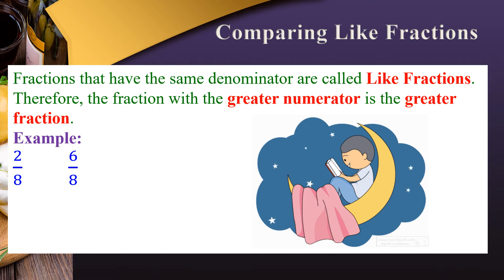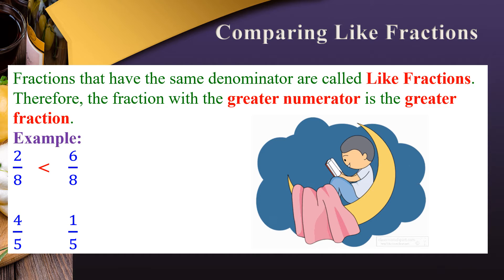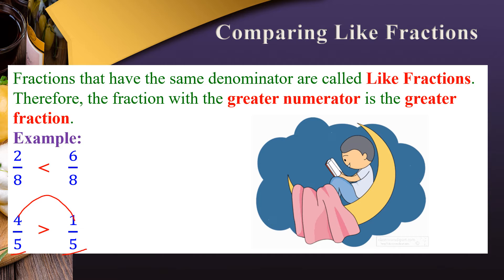Since 2 is less than 6, we place the less-than symbol facing towards 6/8. Therefore, 6/8 has the greater numerator. Similarly, in another example with the same denominators, we compare numerators: 4 is greater, therefore 4/5 is greater than 1/5.